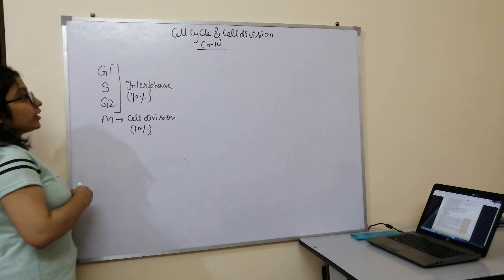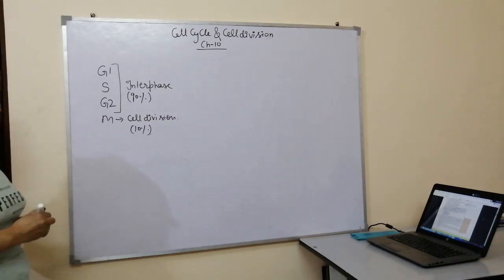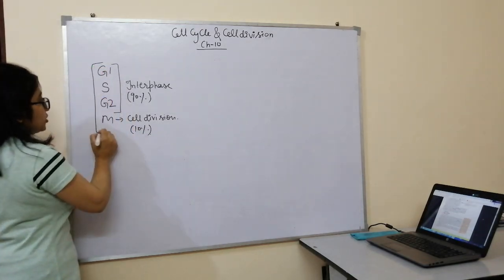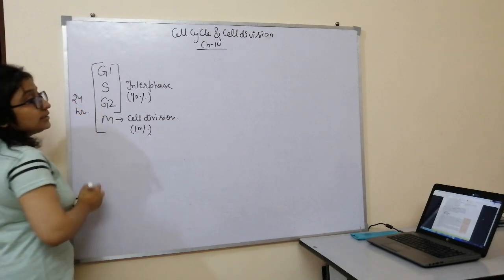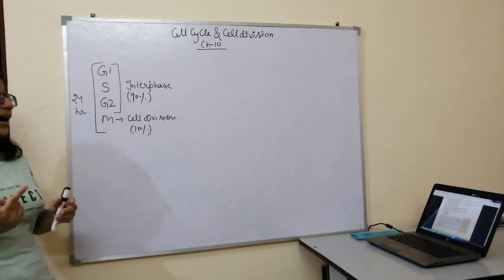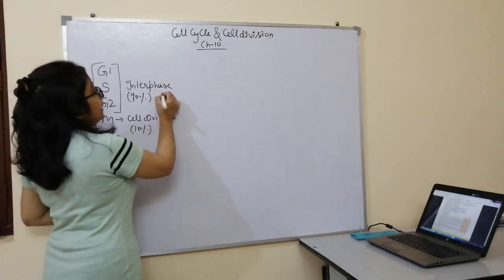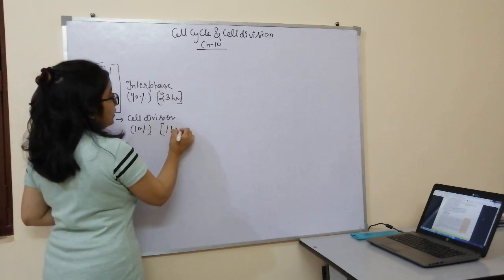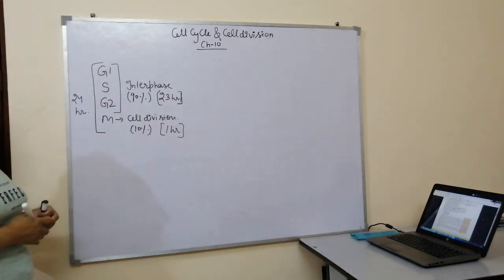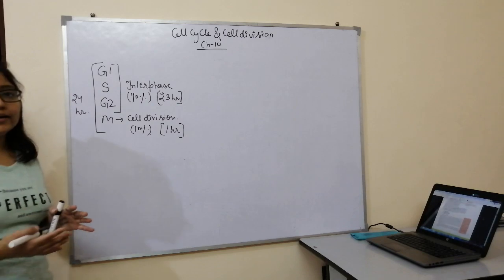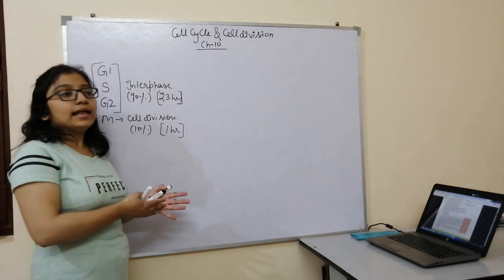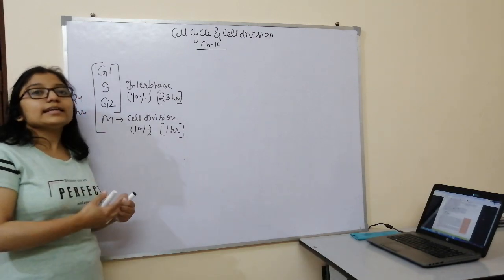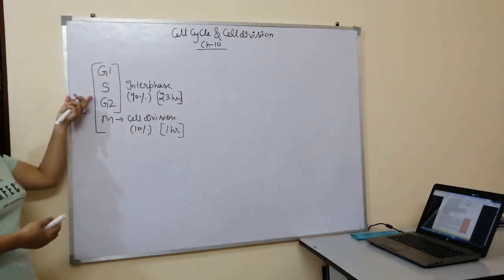In a typical human eukaryotic cell, the whole cell cycle is completed in 24 hours — the cell spends 23 hours in interphase and only 1 hour in actual cell division. Different cells have different division times: E. coli bacteria divide in 20 minutes, yeast cells take 90 minutes, and human cells take 24 hours.